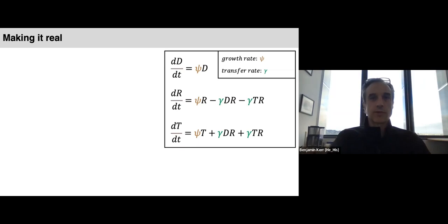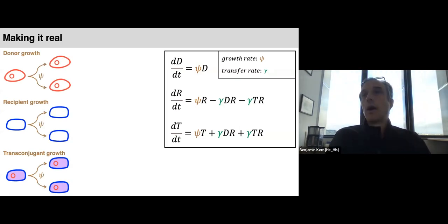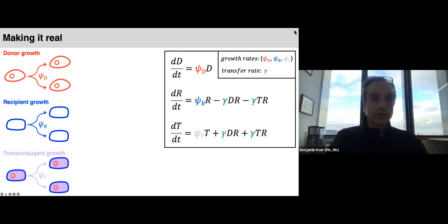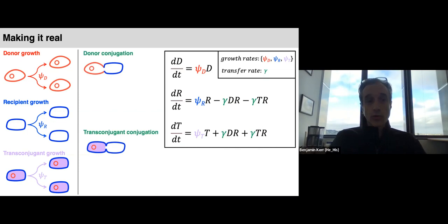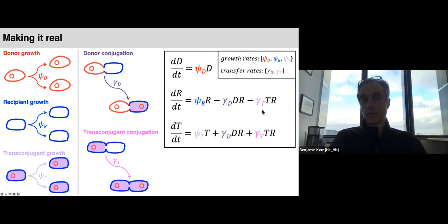This model, like all models, makes assumptions that can be questioned. One primary assumption is that all populations grow at the same rate — but different species grow at different rates, and possessing a plasmid is often costly, so donors may grow slower than recipients. The easy solution is to add subscripts to each psi parameter and update the model with a set of growth rates. A second identicality assumption is that the transfer rate from a donor to recipient equals the transfer rate from a transconjugant to a recipient — which may also not hold. Again we solve this by adding subscripts, giving separate gamma parameters as seen in this more complicated model.